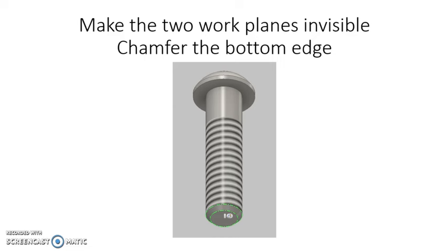Head down to the bottom of the shaft, throw in a chamfer, and make the two work planes that were there, those orange-ish work planes, right-click on those and make them invisible. And whenever you finish that, then you're done with the axle peg. Congratulations.